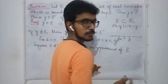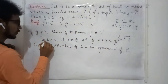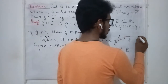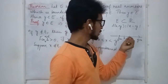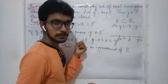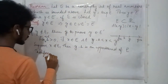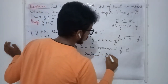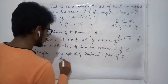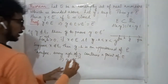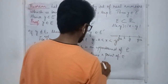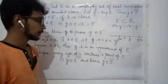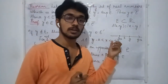Now, take the neighborhood of y with radius h. For all positive h, this neighborhood contains at least one point x which is a member of E. Therefore, every neighborhood of y contains a point of E, which means y is a limit point of E. If y is a limit point of E, then y is in the closure of E.